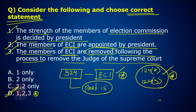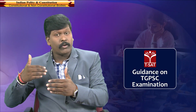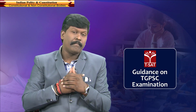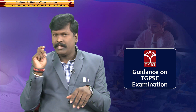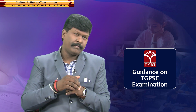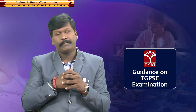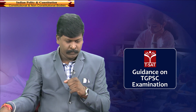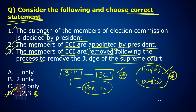Article 324 is part of Part 15 of the constitution, which deals with elections from Articles 324 to 329. Two articles are very important: Article 324 talks about the Election Commission of India, and Article 326 deals with the right to vote on the basis of universal adult franchise.